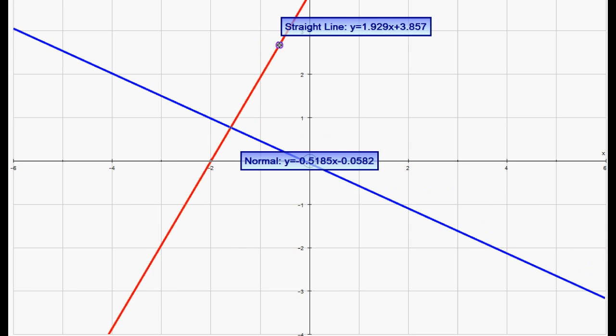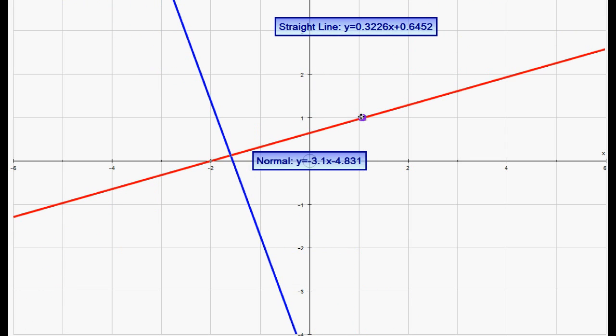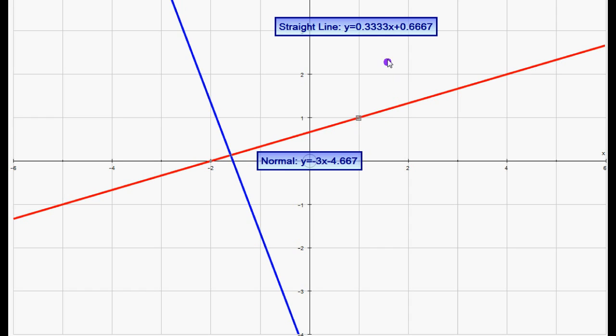Now let's just change one of these points until we get another nice set of values. Notice here this is y equals x plus 2. This is y equals minus x minus 1.2. And here we go. Notice this one is y is a third x and this one is minus 3x.